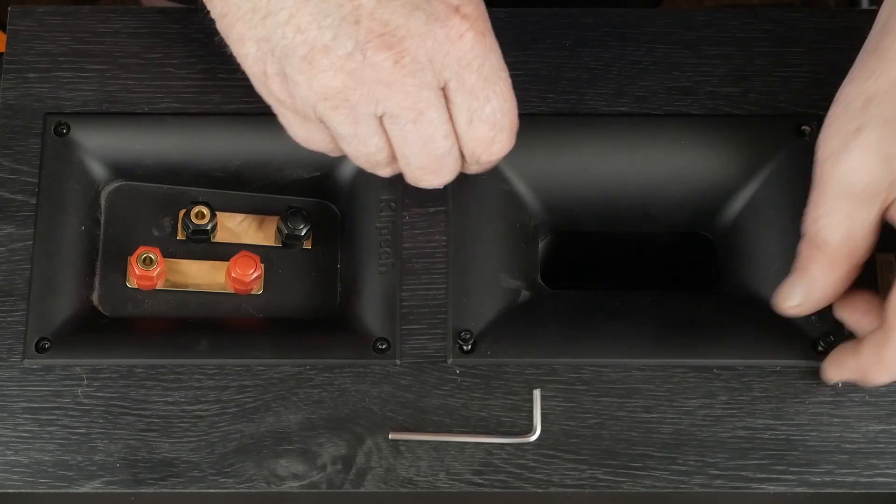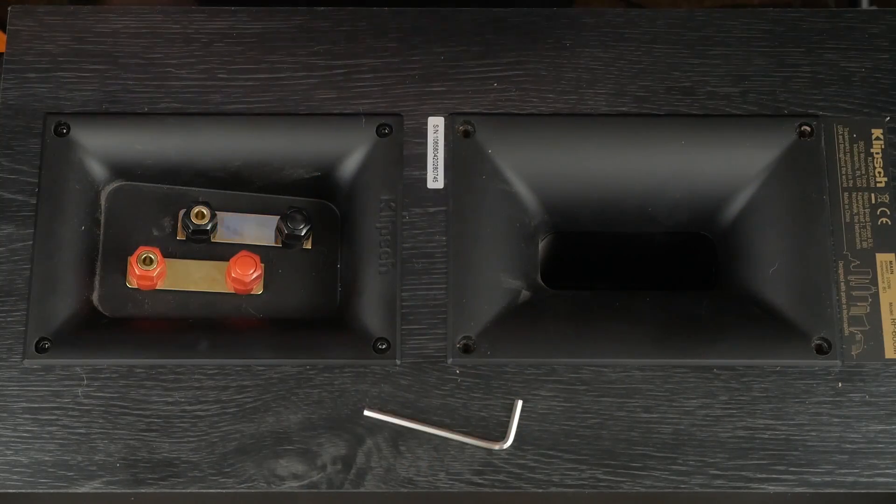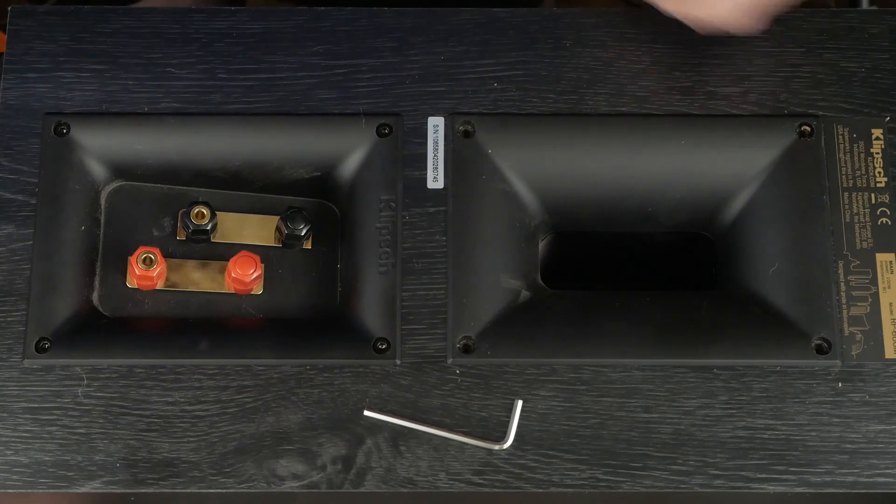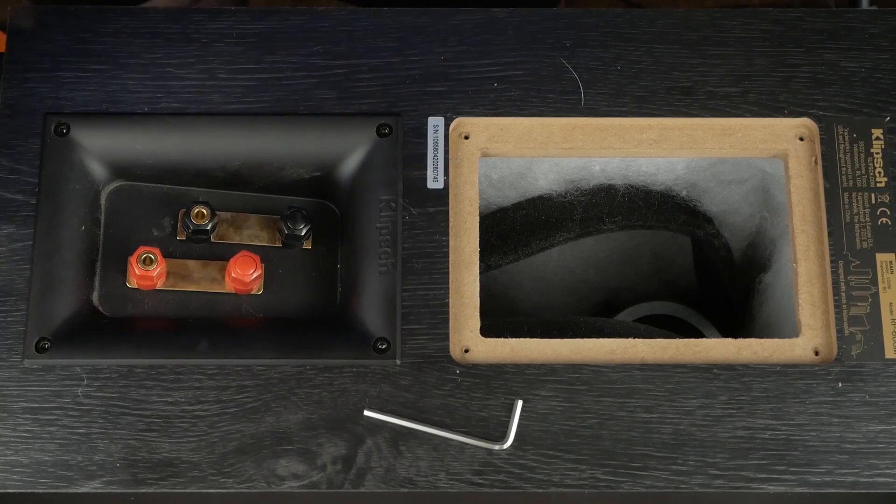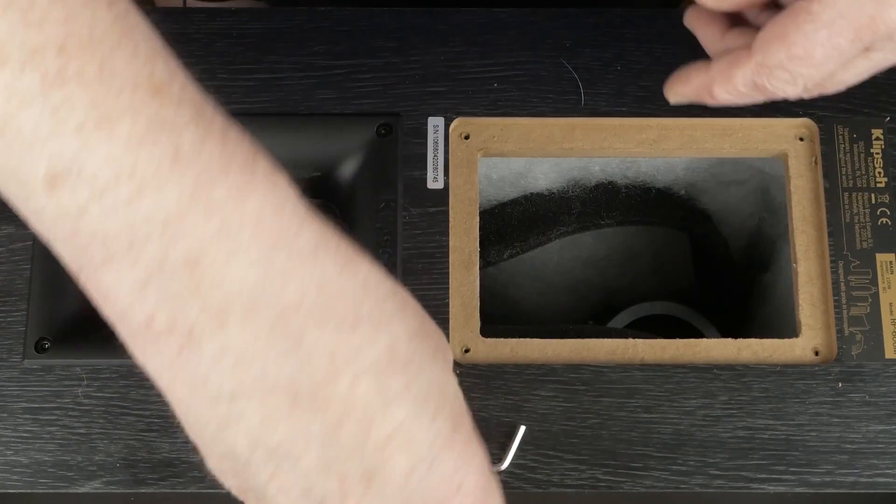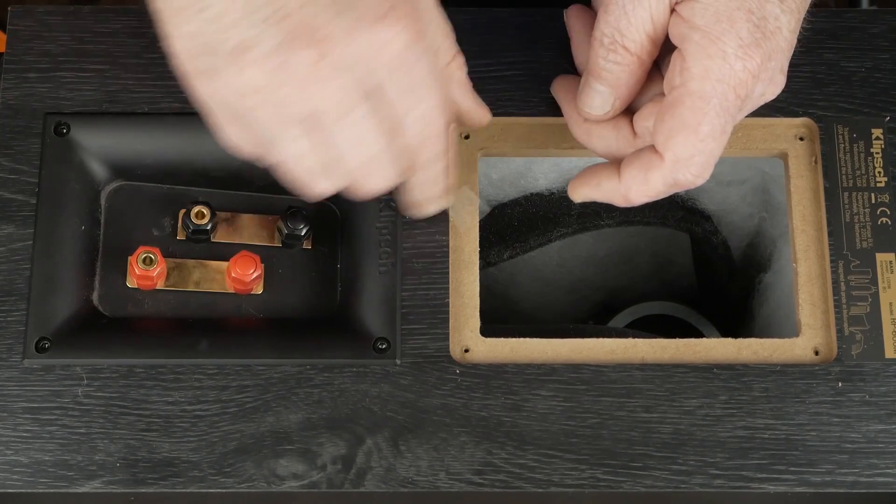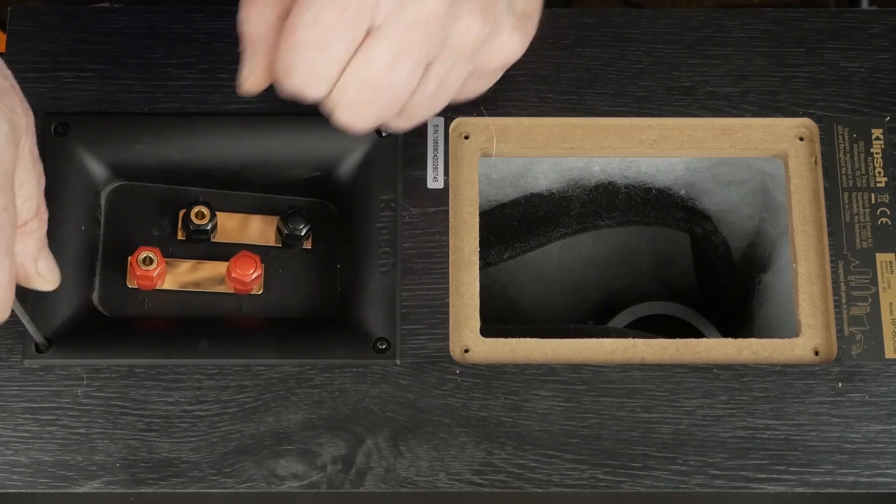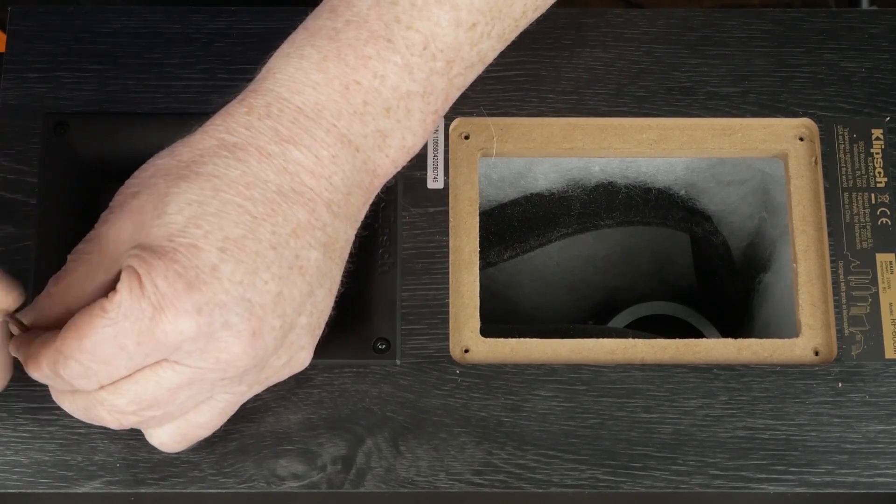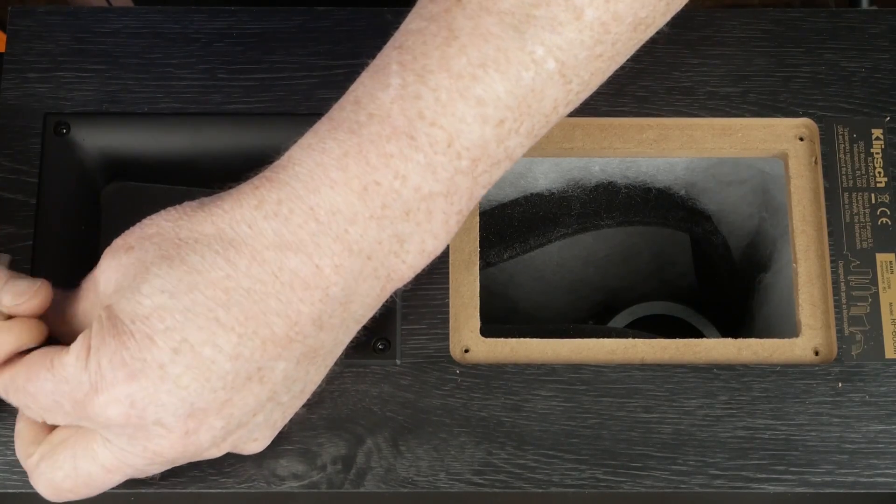Okay, so the first thing you want to do is go ahead and take this rear port off. Use your little 3 millimeter allen wrench, take those screws out, pull this board out. That just gives you another opening to reach in here and help move wires around. Then the next thing you want to do is pull off the speaker terminal slash crossover board. It's all connected here together.